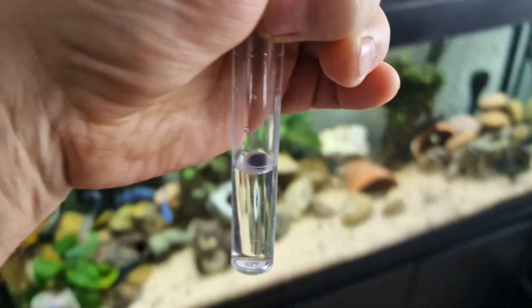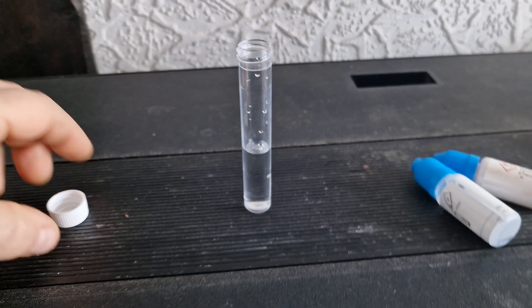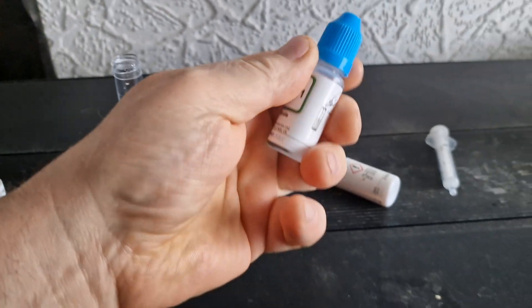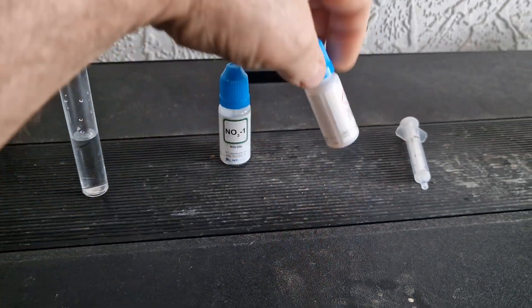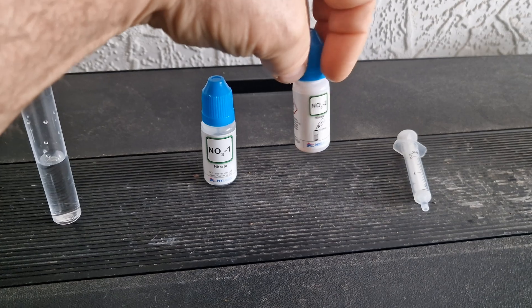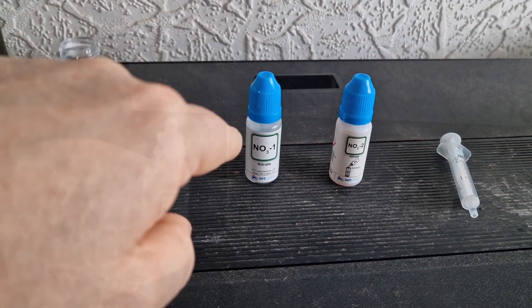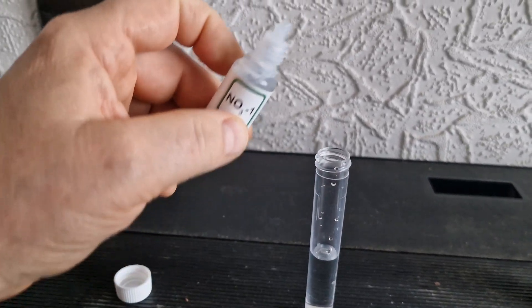Okay, so the first thing we've got to do is find number one. That says number one and number two. So we've got to shake this for 30 seconds, I won't bore you with that. I shook for 30 seconds and it says six drops.